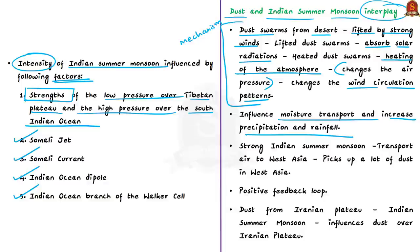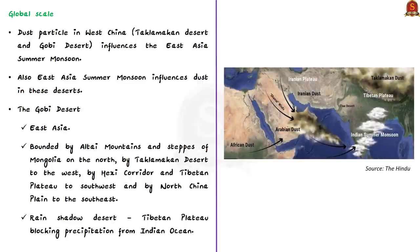A strong Indian summer monsoon can also transport air to West Asia, where it picks up more dust, forming a positive feedback loop. Researchers also believe dust from the Iranian plateau influences the Indian summer monsoon, and vice versa. On a global scale, this positive feedback loop is observed worldwide — for example, dust from the Taklamakan Desert and Gobi Desert influences the East Asia summer monsoon.